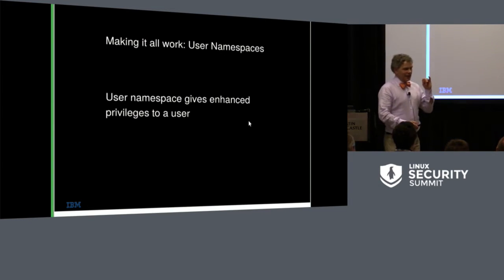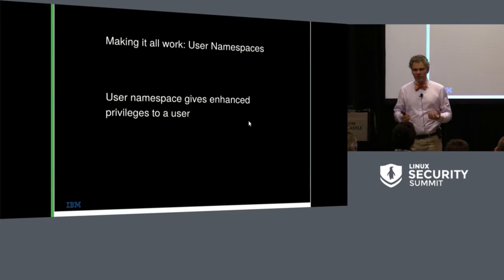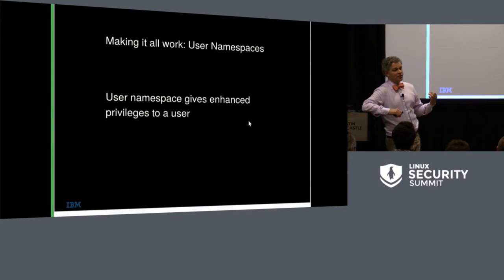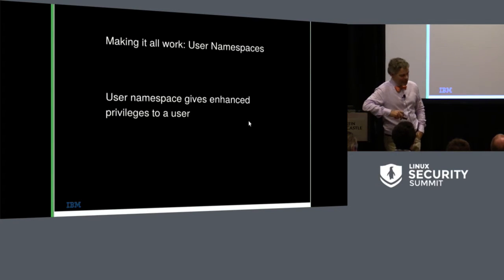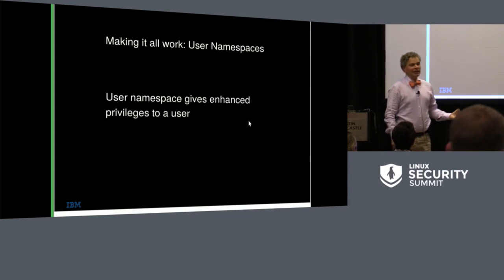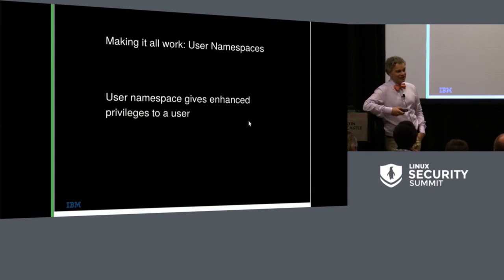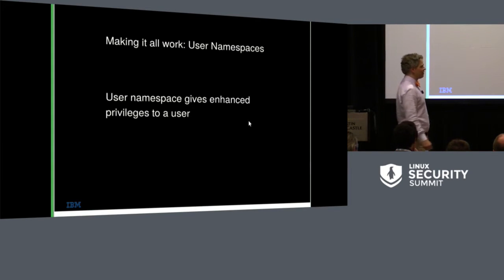Let me explain how user namespaces actually work, because this is the key to understanding all of Docker's eventual security primitives. The real issue is that user namespace gives enhanced privileges to a user — it's a mechanism for elevating privilege. Every time you do that, you get potential security threats, which is what Richard was complaining about this morning. However, it is also very possible to use this mechanism to give a user sufficient privileges that they think they're root but can't do any damage to your system.